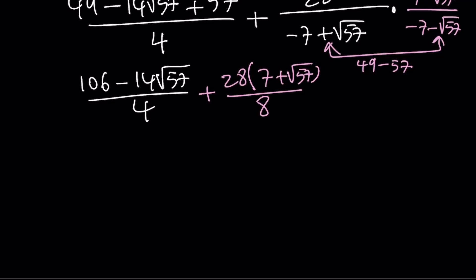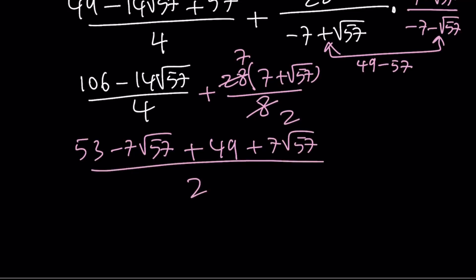Divide by 4, divide by 4, divide by 4, and then divide by 2 here, going to get 53 minus 7 root 57. Now, they have a common denominator. Once we simplify that, and this is going to give us 49 plus 7 root 57, and that's going to be all over 2 because what I did was simplify, divide by 2.